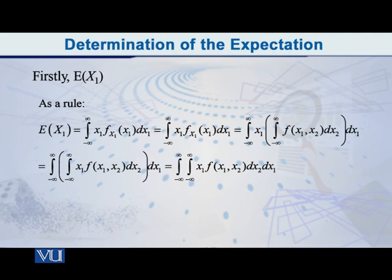In the bracket you write the actual formula by which we obtained that marginal density, and what is that? It is the integral from minus infinity to infinity of f(x1, x2) with respect to x2. You know that if you want to find f(x1), you integrate with respect to x2.